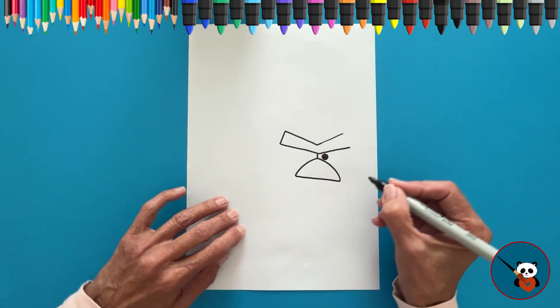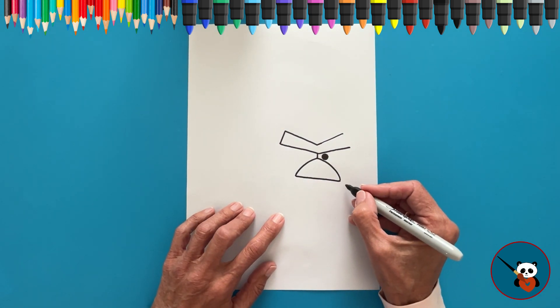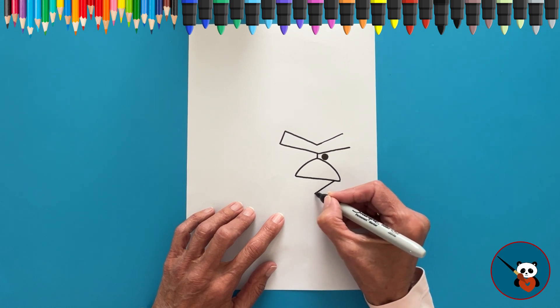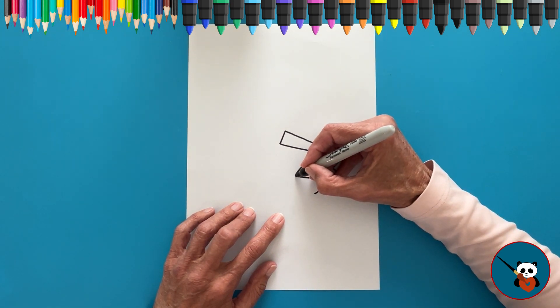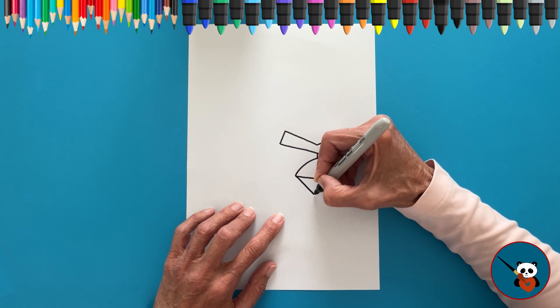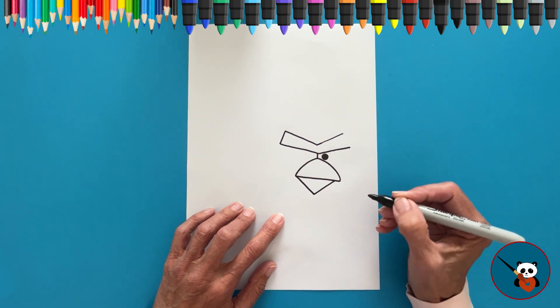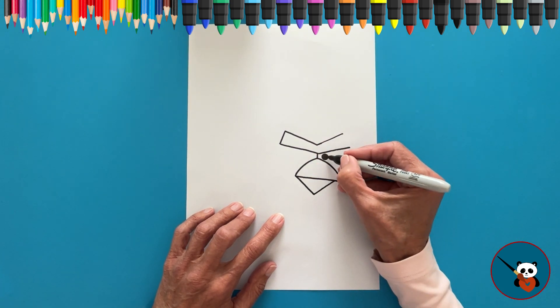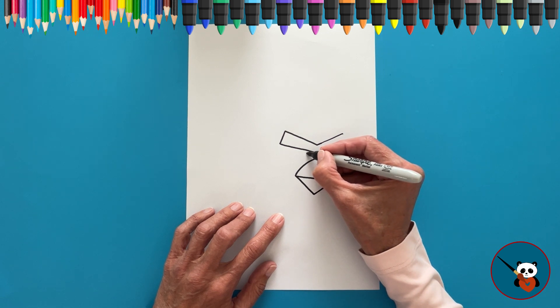For the bottom part, draw an inclined straight line on both sides. Now let's make a small circle for the second eye and paint black.